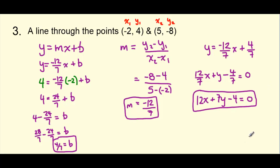To summarize: when finding equations of lines, start by putting it into y equals mx plus b form. Find your slope, then use a given point to plug into x and y to solve for your y-intercept. Finally, rearrange everything into standard form.